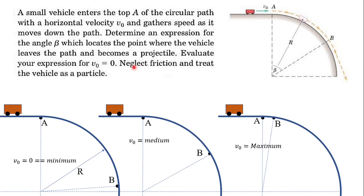This video covers the main concepts of the normal-tangential coordinate system for evaluating Newton's second law, forces equals mass times acceleration, specifically the acceleration and force components related to the normal and tangential directions. The problem states that a small vehicle enters the top point A of a circular path with a horizontal velocity V-naught, gathers speed as it moves down the path. We need to determine an expression for the angle beta which locates the point where the vehicle leaves the path and becomes a projectile, then evaluate the expression for V-naught equals zero, neglecting friction and treating the vehicle as a particle.